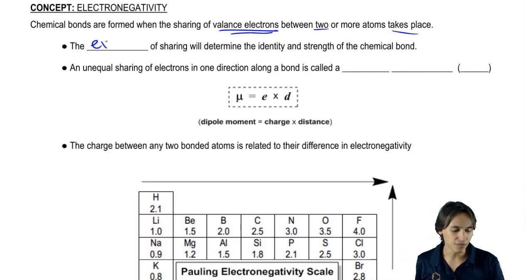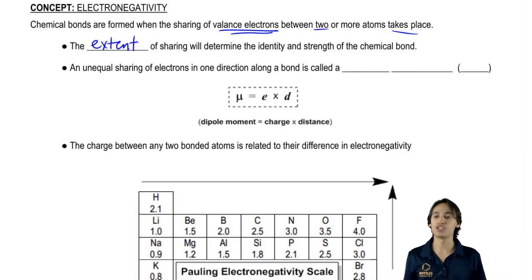But the extent of that sharing will determine the identity and strength of that bond. What that means is that all bonds are not created equal. Some of them are very strong because they have intense sharing and some of them are very weak because they barely have any sharing at all.